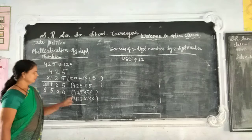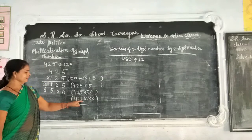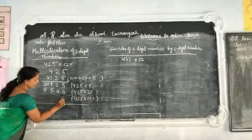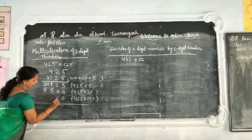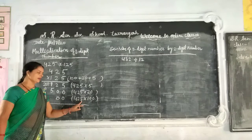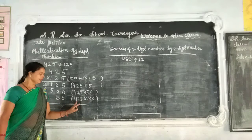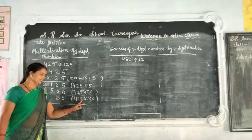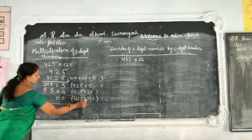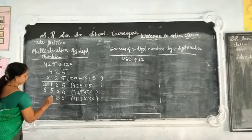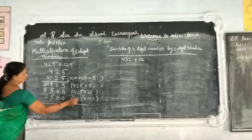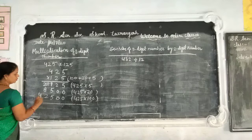Now, for this digit, we show 2. 0 is equal to 0. So 425 multiplied by 1: 1 times 5 is 5, 1 times 2 is 2, 1 times 4 is 4.